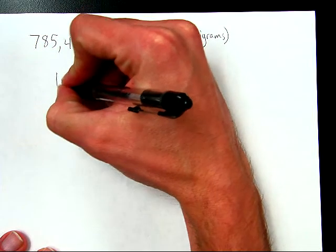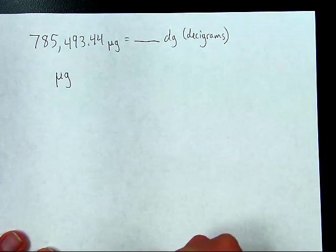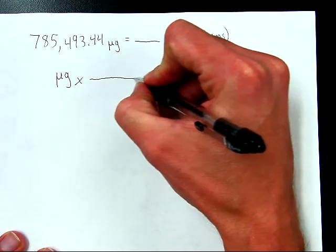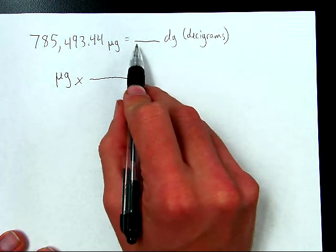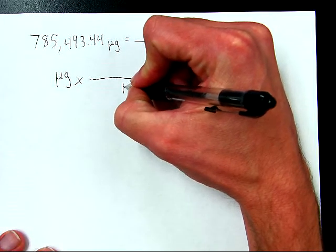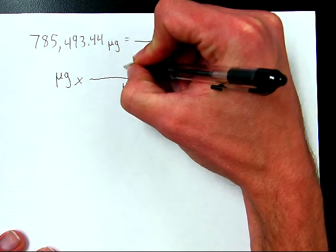You write down what we started with, so micrograms, and then we're going to multiply that by some conversion factor. Now remember the plan of attack was go from micrograms to grams, and then from grams to decigrams. So let's do that. Micrograms, I'll put that here on the bottom of this conversion factor, because it needs to cancel out. I'm going to go from micrograms to grams.